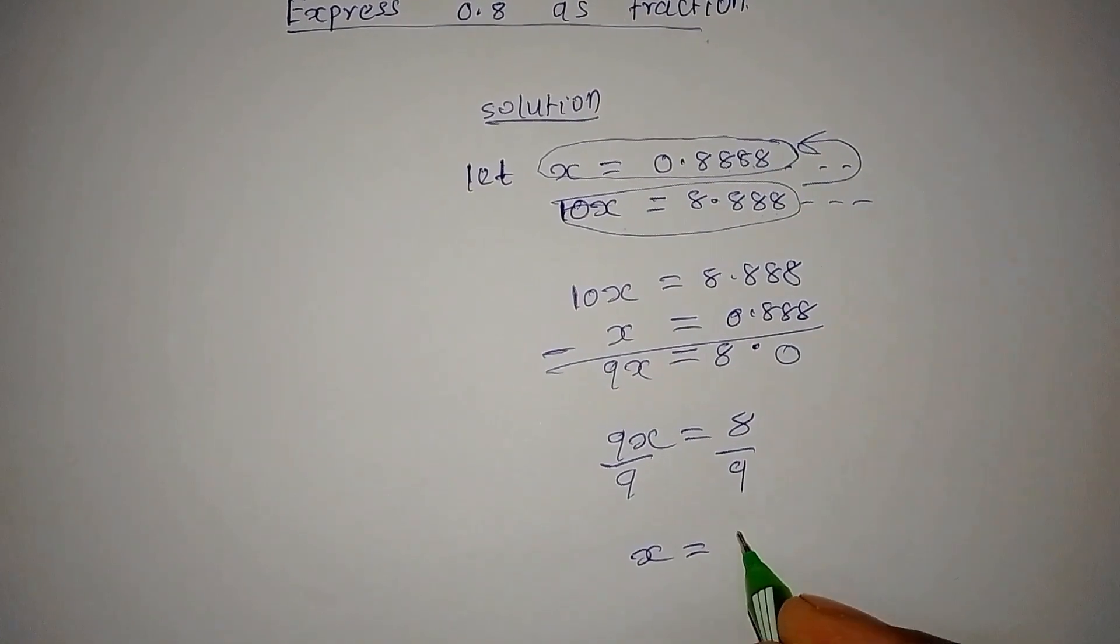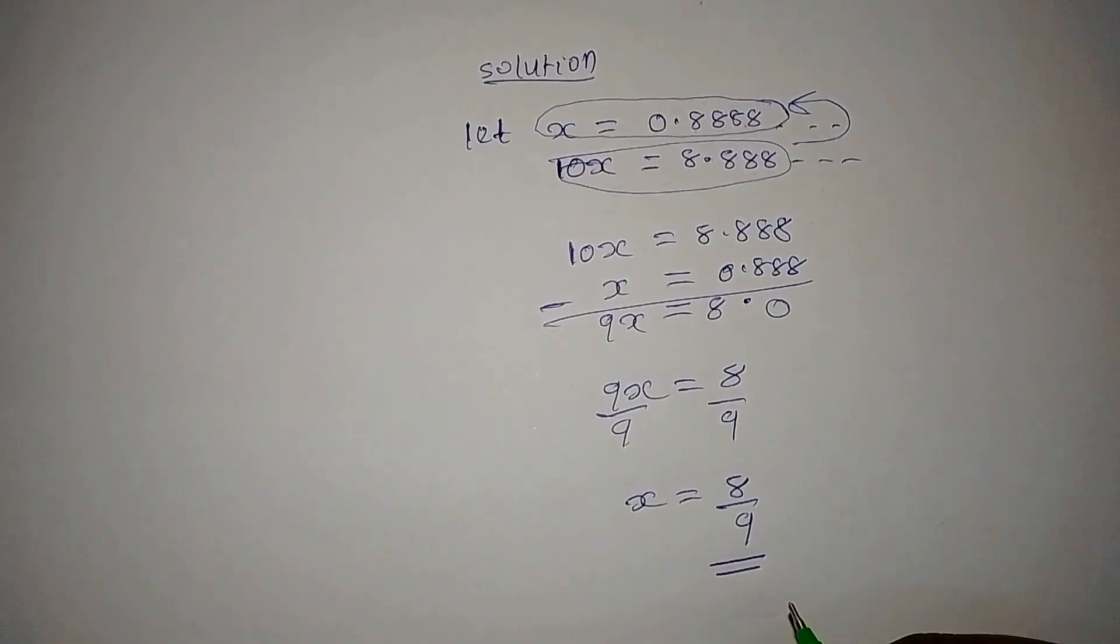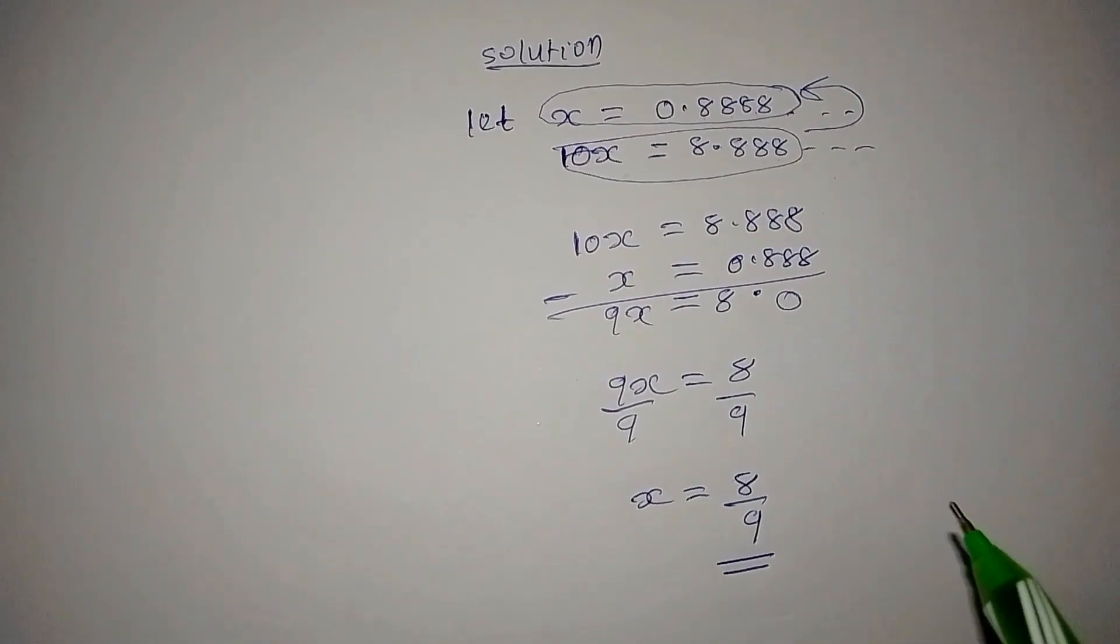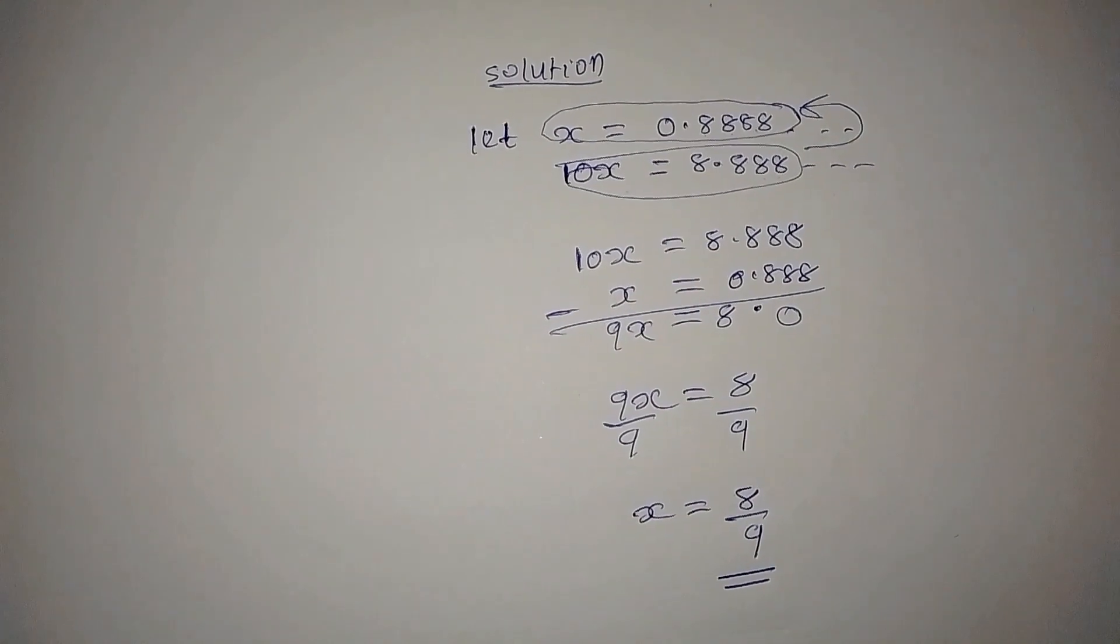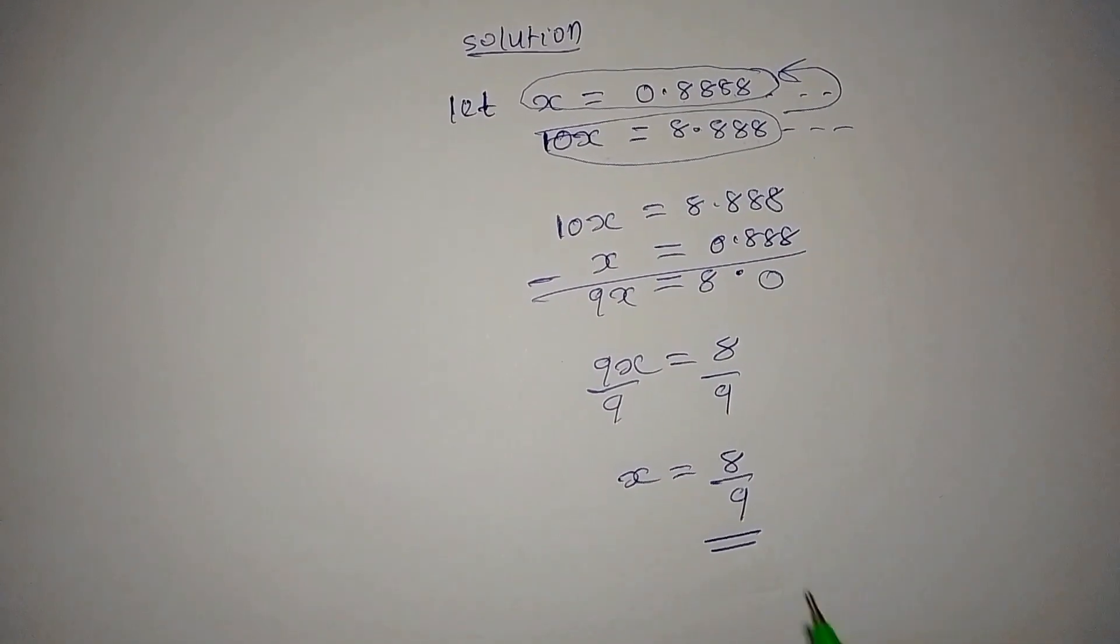Now x equals 8 divided by 9. This is the simplest form of the fraction, so we don't simplify further. That's the solution.